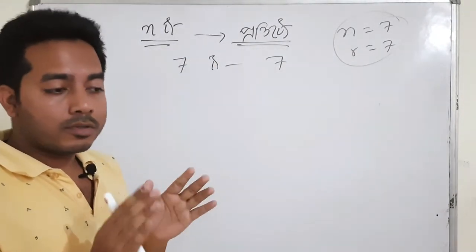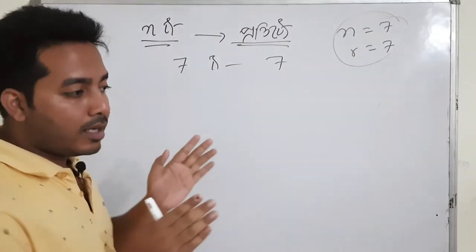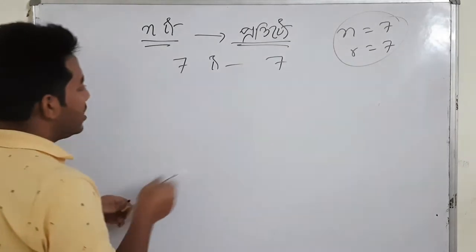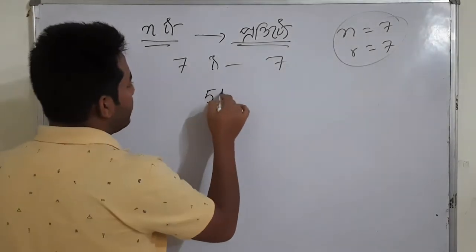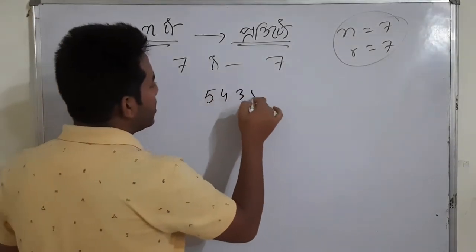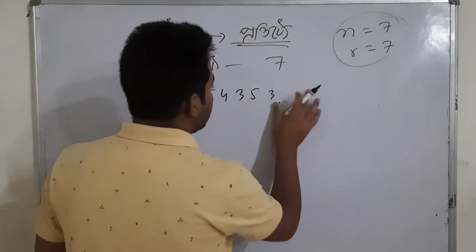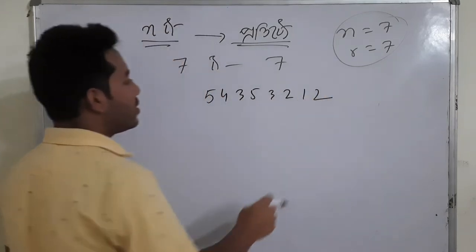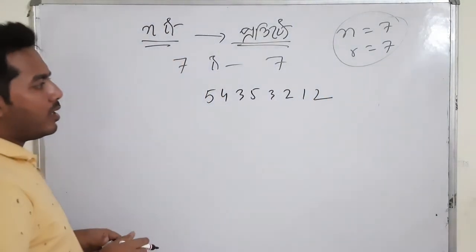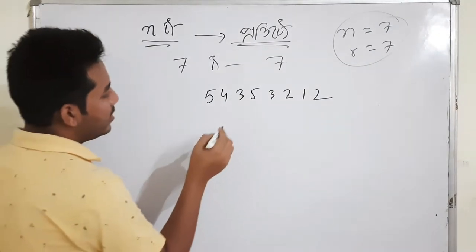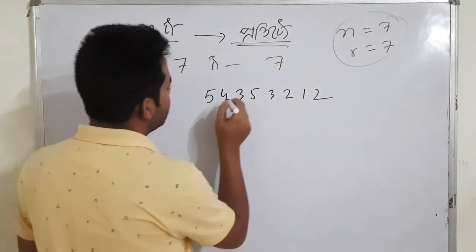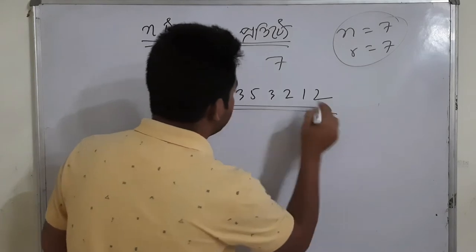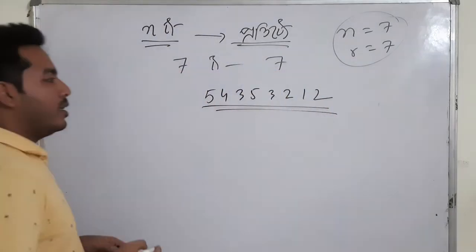The next concept means arrangement by repeating. So I wrote 5, 4, 3, 5, 3, 2, 1, 2. This is the first one. If you have a digit, you can see 5, 4, 3 — and you can see that. So this is the first one.